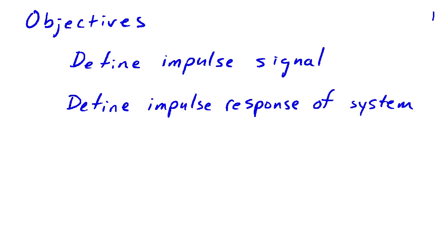The impulse response is one of several different ways of describing the behavior or characteristics of a system. Our objectives are to first define what we mean by an impulse as a signal, and then we'll introduce the idea of the impulse response of a system and look at some examples.